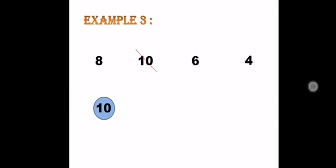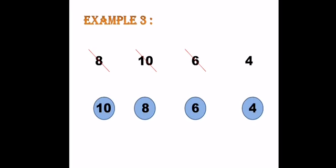Eight is bigger than six. So, take eight and compare it to four. Eight is bigger than four. So, it will be the following number. Cross out eight. Now, finally, compare six to four. Six is bigger than four. So, it will be the following number. Cross out six. And finally, four will be the last number in our descending order.